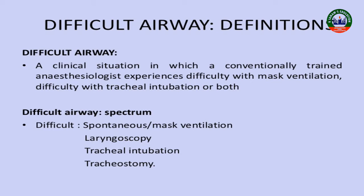Normal airway kya hoti hai — passage through which the air passes during respiration. Difficult airway kya hoti hai? Difficult airway ek clinical situation hoti hai jismein ek trained anesthesiologist difficulty face karta hai — with mask ventilation, patient ko mask ventilation karni hai lekin anesthesiologist ko difficulty ho rahi hai, ya difficulty with tracheal intubation.